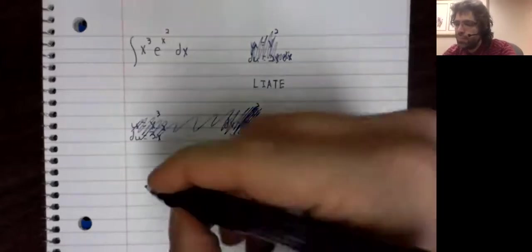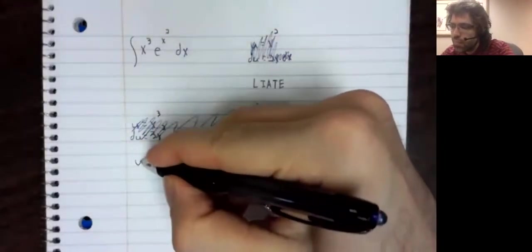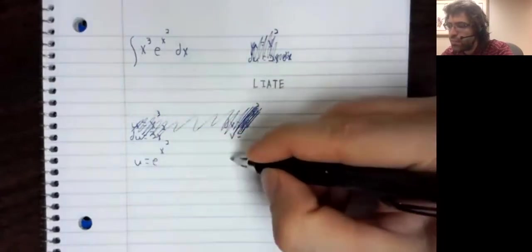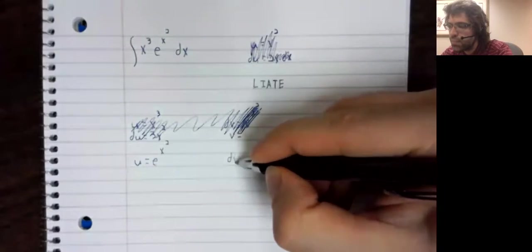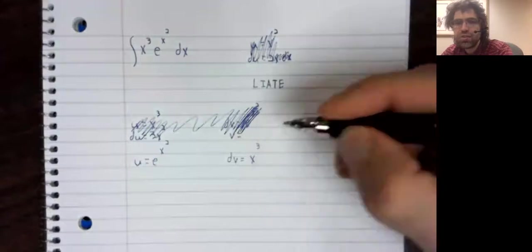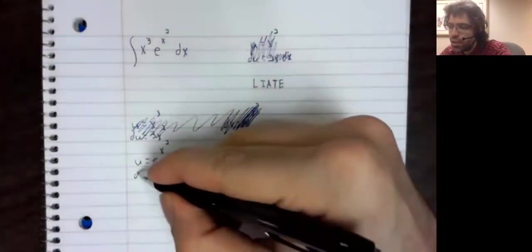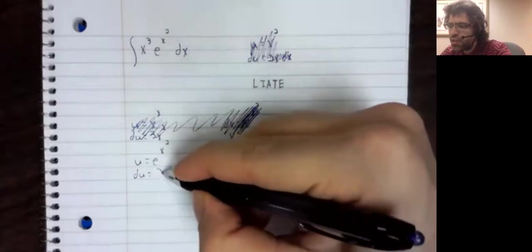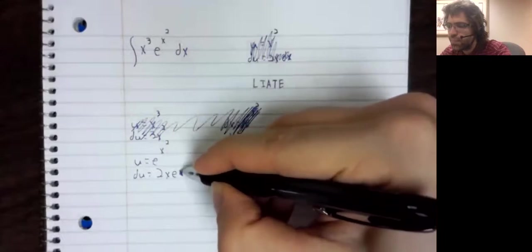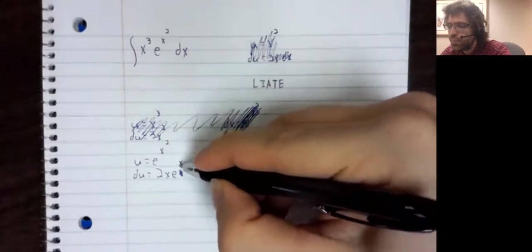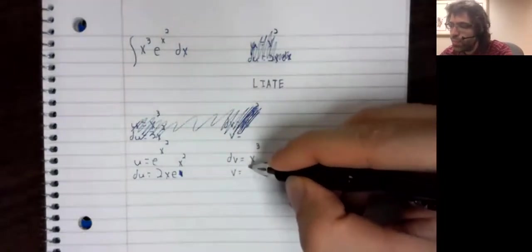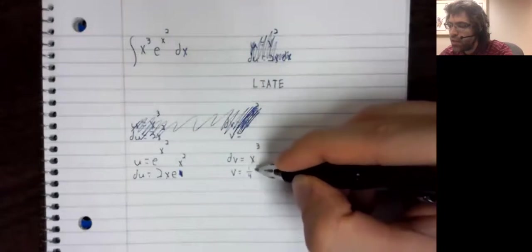What if we let u be e to the x squared, dv is x cubed. Well, at the very least, we can find both du and v.